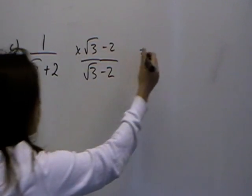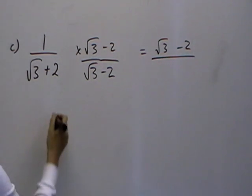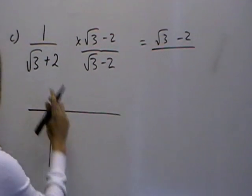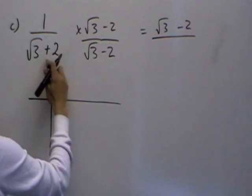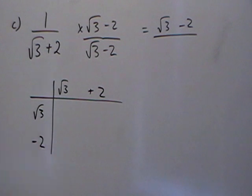So the top line is root 3 minus 2. Now the bottom line we can do as a grid like before, like you are multiplying out two brackets. So I've got a root 3 plus 2 and a root 3 minus 2.